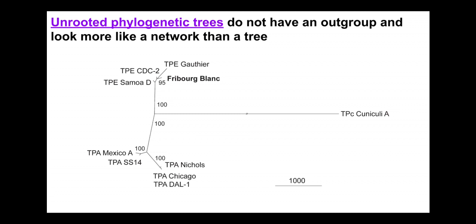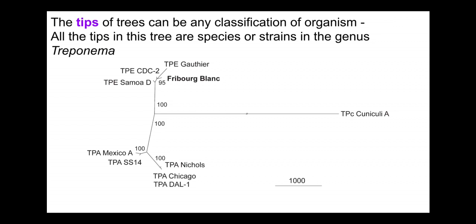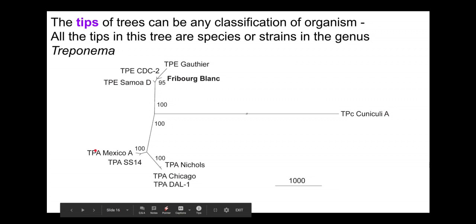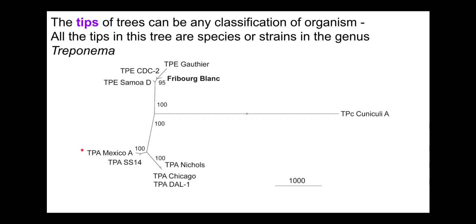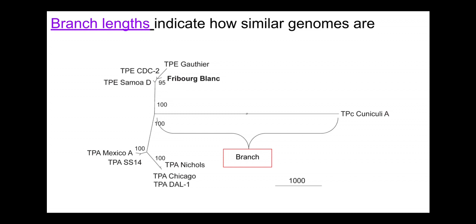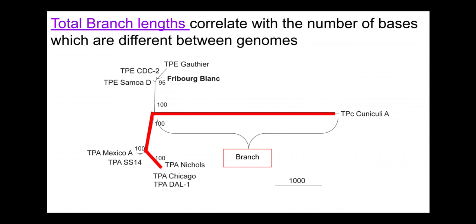It's very common to use unrooted trees when studying bacteria, especially with sequence and genomic data. The tips here are individual strains — remember, tips in phylogenetic trees can represent many different things, so always make sure you know what the tips mean. In unrooted trees the branch lengths have meaning; in this case they indicate how similar the genomes of different strains are. A long branch indicates a large difference; short branch lengths indicate less difference. To compare how similar two tips are, we add up the branch lengths connecting them — for example, tracing from rabbit syphilis down to one of the human strains. There must always be a scale indicating how to interpret branch lengths.